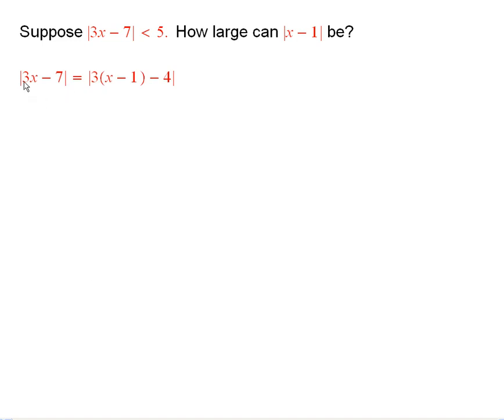First, notice that absolute value of 3x minus 7 is equal to absolute value of 3 times the quantity x minus 1 minus 4.